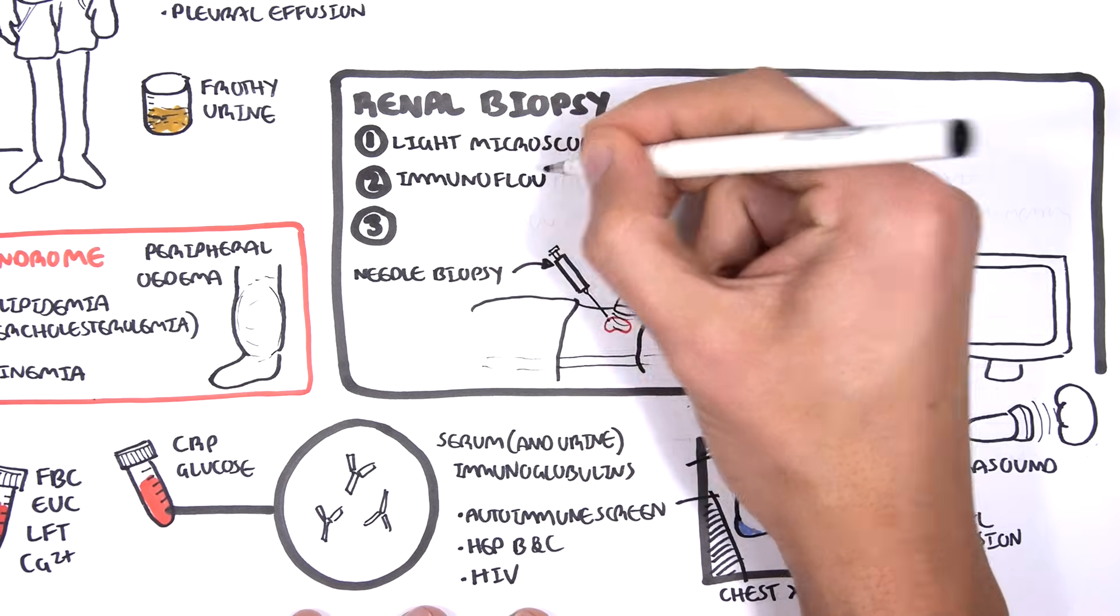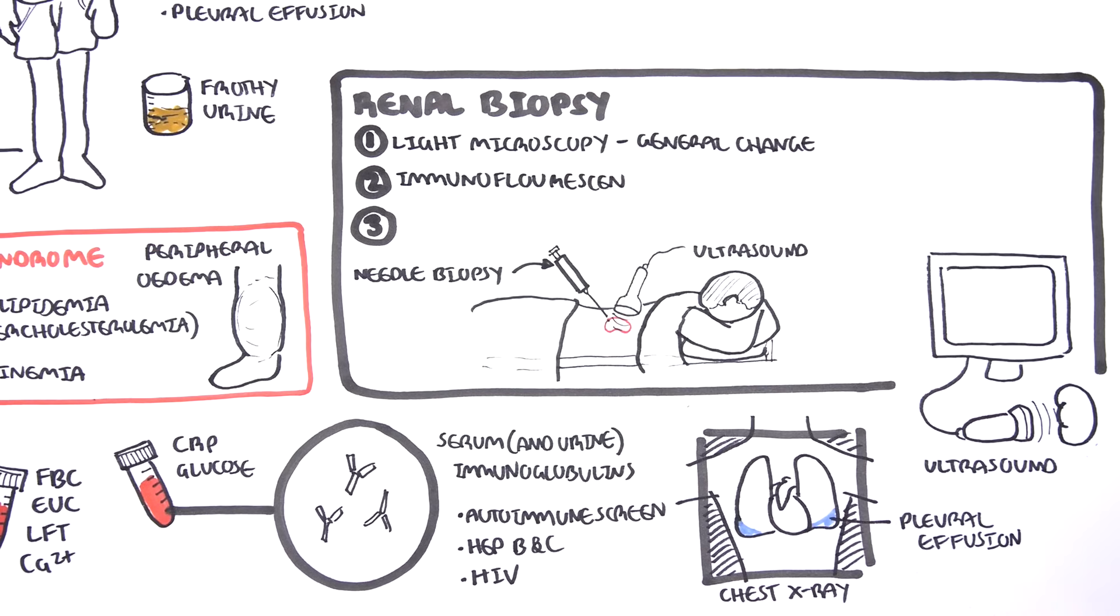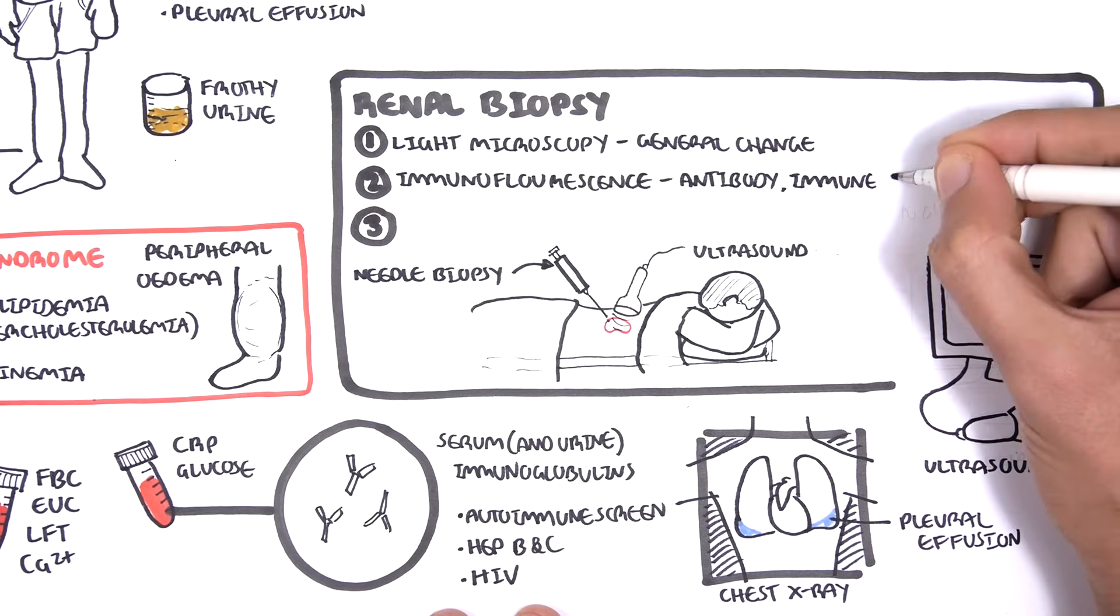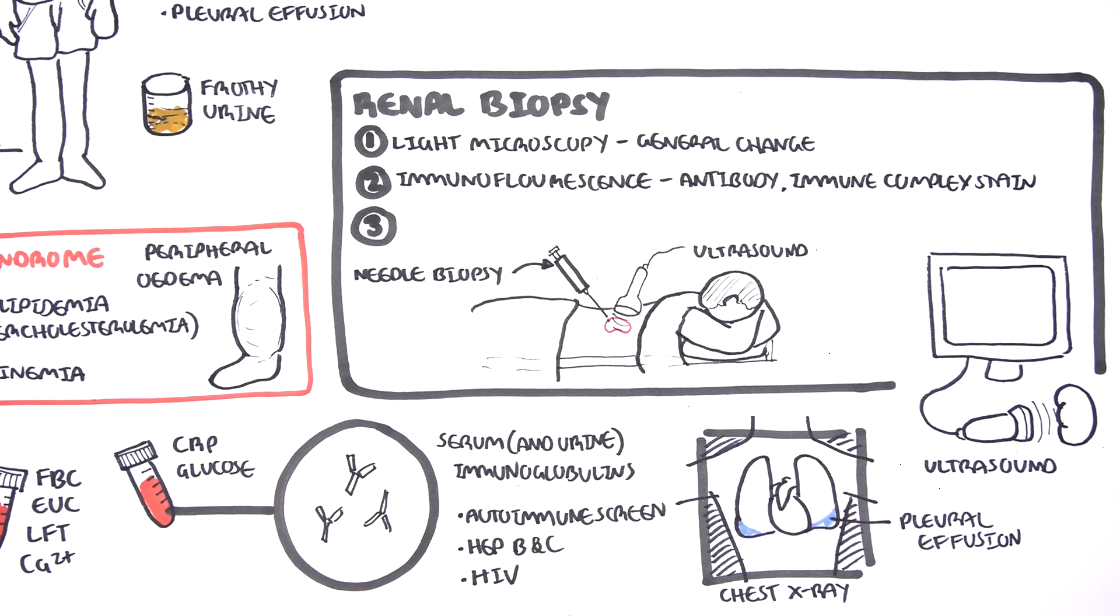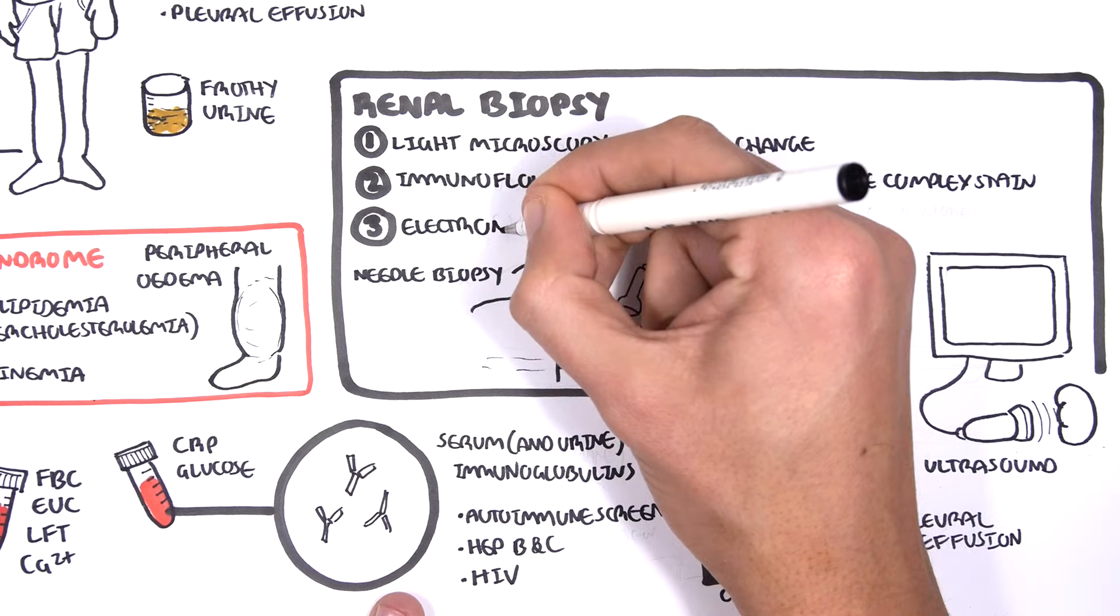Two, immunofluorescence. Here, they expose the kidney tissue with specific tags that bind to antigens, immune complexes, and immunoglobulins in that tissue. Once they expose the biopsy with these tags, it lights up with immunofluorescence. This tells the person if there is or isn't presence of those things they were looking for.